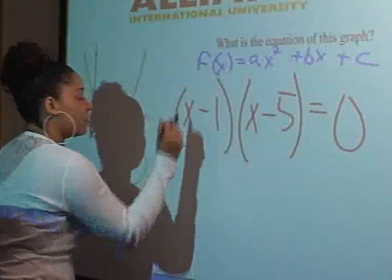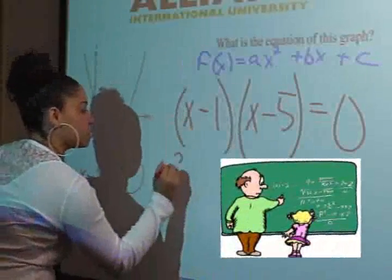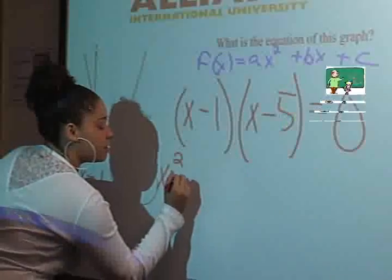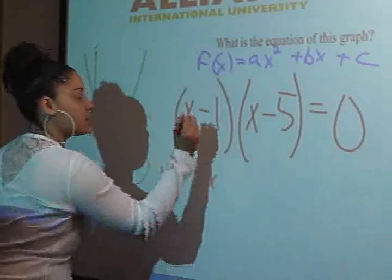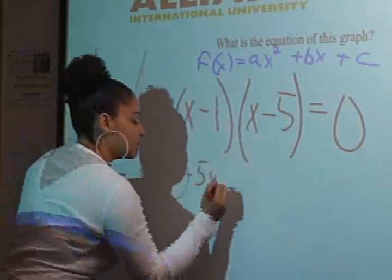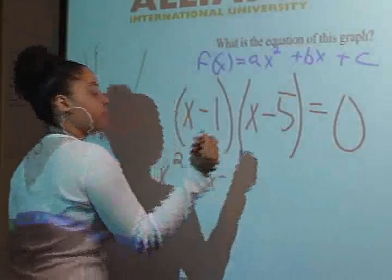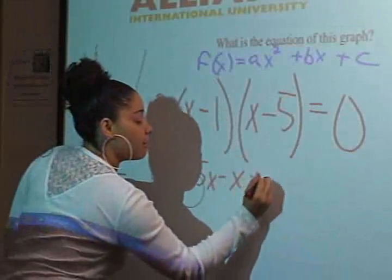So basically if we just times these out, x times x is x squared, x times negative 5 is negative 5x, negative 1 times x is negative x, negative 1 times negative 5 is positive 5.